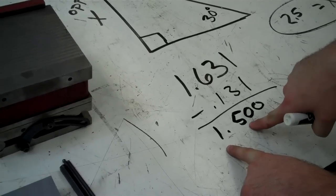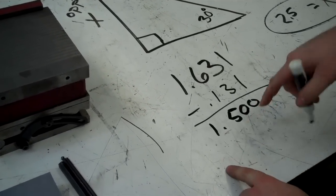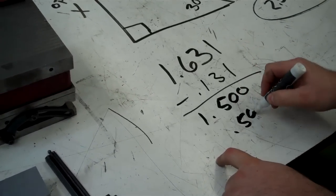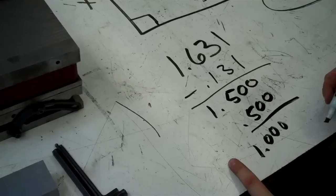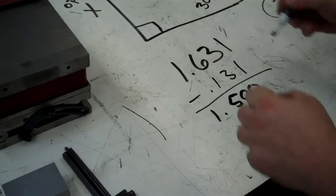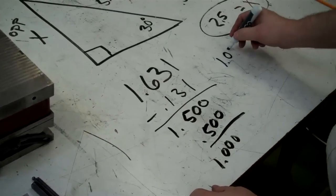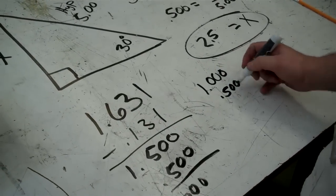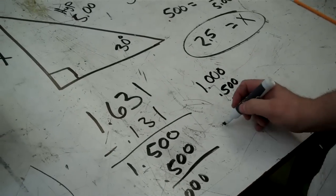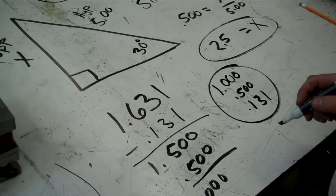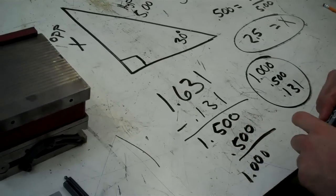So then I look for blocks that are 500, 1 inch. I would use a 500 block. That takes me down to 1 inch left, and I would use a 1 inch block. So the three blocks it would take to make this up would be a 1 inch block, a 1/2 inch block, and a block that was 0.131. I would stack all three of those up to get my final size.